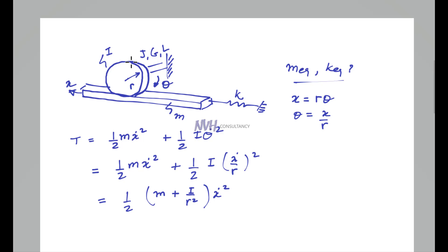This is the kinetic energy of the system. The term M plus I by R square is the equivalent mass of our system. I can be written in terms of mass provided all the conditions are true.